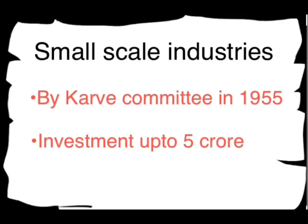In the year 1950, the Planning Commission was established. In the year 1951, the First Five Year Plan was made, which was from 1951 to 1956, and the main focus of the First Five Year Plan was on the agriculture sector. The Second Five Year Plan was made in the year 1956, and the main focus of this Second Five Year Plan was on the industrial sector. Now, if we have to grow the industrial sector, we must first be clear with the meaning and types of industry.